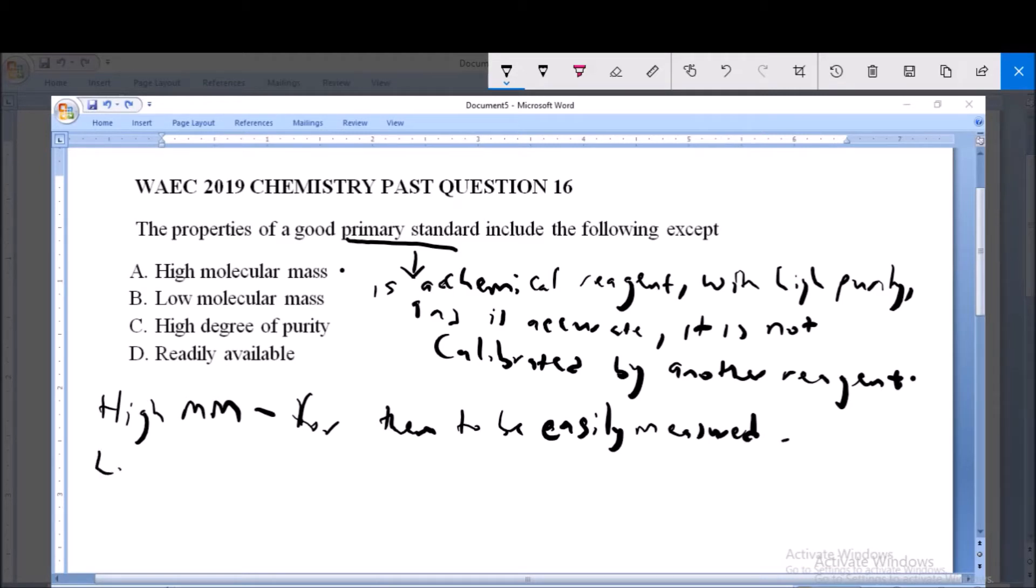Now low molecular mass. The low molecular mass of course is opposite of high molecular mass and if it is opposite of high molecular mass it means that there will be difficulty in measurement.